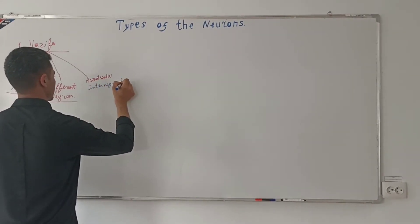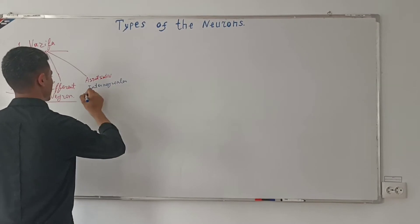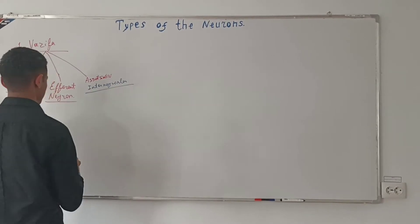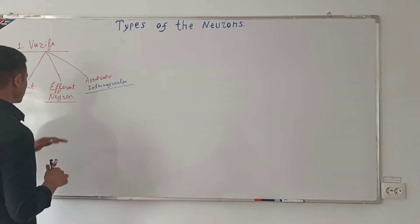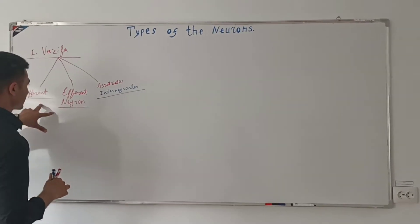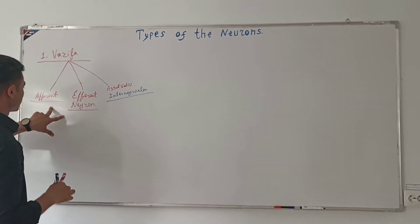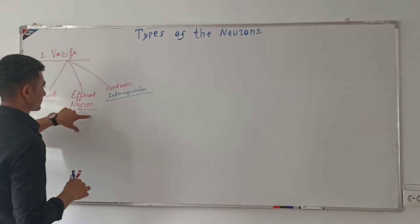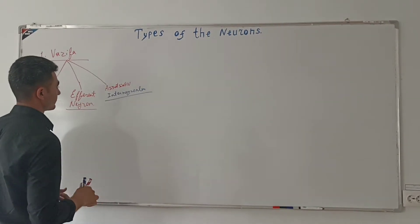Tibbiy terminologiyada afferent neyronlar deb ataladi. Vazifasiga ko'ra afferent neyronlar shunday tavsiflanadi.